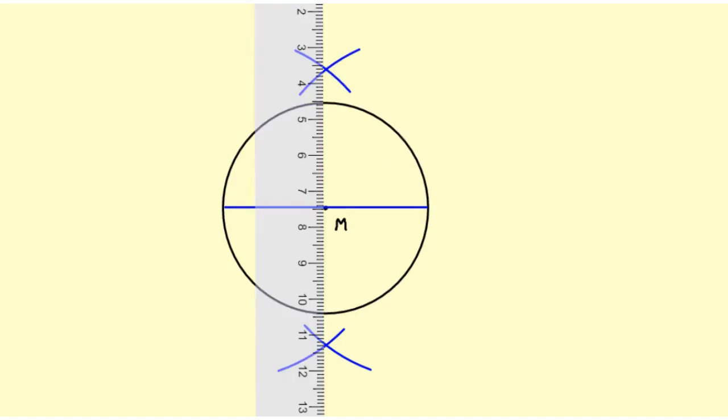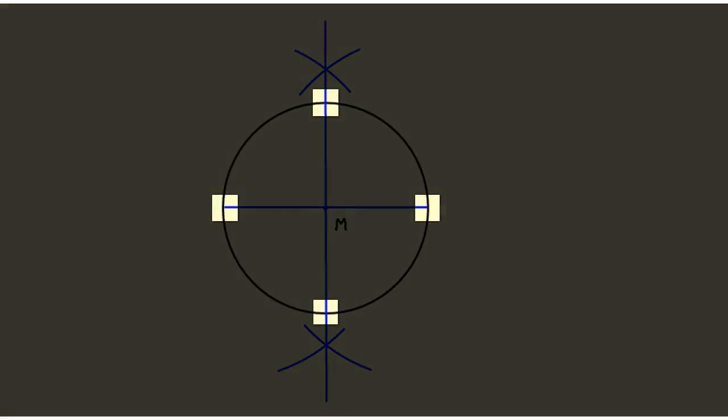Next, we take our ruler and draw that perpendicular line. Each of these points of intersection will be the vertices of my inscribed square.